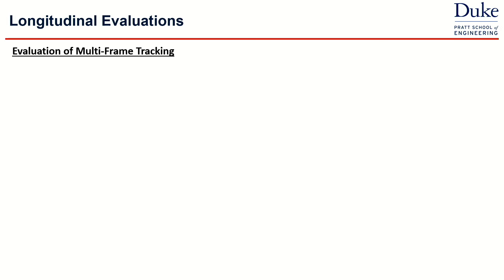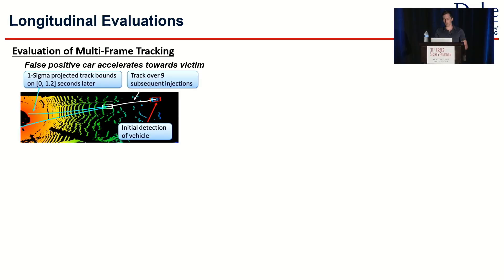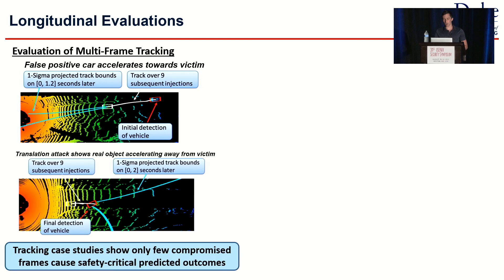We also evaluated the frustum attack under longitudinal circumstances using multi-frame tracking and motion object prediction. By injecting spoof point clusters at increasingly closer distances — starting farther away and moving closer over longitudinal time points — we were able to create an accepted track of an adversarial object. Predicting that motion just a couple of seconds later makes it appear as if this adversarial object is on a crash course for collision with the victim, forcing evasive maneuvers. Similarly, we can do the opposite, making an object appear to travel away, which compromises adaptive cruise control and path planning.